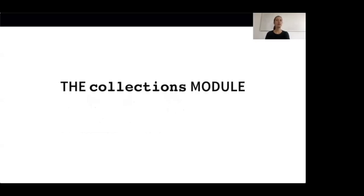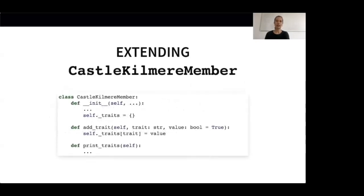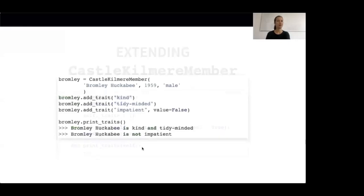The next topic I would like to cover is the defaultdict class, which is part of the collections module — a really cool module and I suggest you check out the other features it offers. Let's say we want to extend the CastleKilmier member class with a traits attribute. So we add a new attribute to our __init__ method which contains the character traits of a CastleKilmier member. We further add a function called addTrait which allows us to add attributes to a character, and a function which prints the character traits of an instance. We can now add traits to Bromley, the school's caretaker.